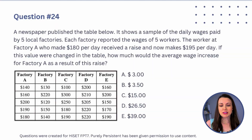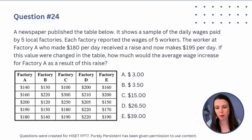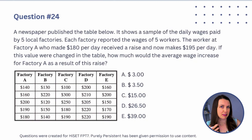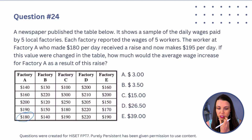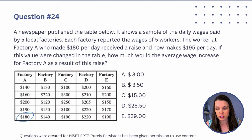Question 24 uses the same table. The worker at Factory A who made $180 per day now makes $195 per day. If this value were changed in the table, how much would the average wage increase for Factory A as a result of this raise?